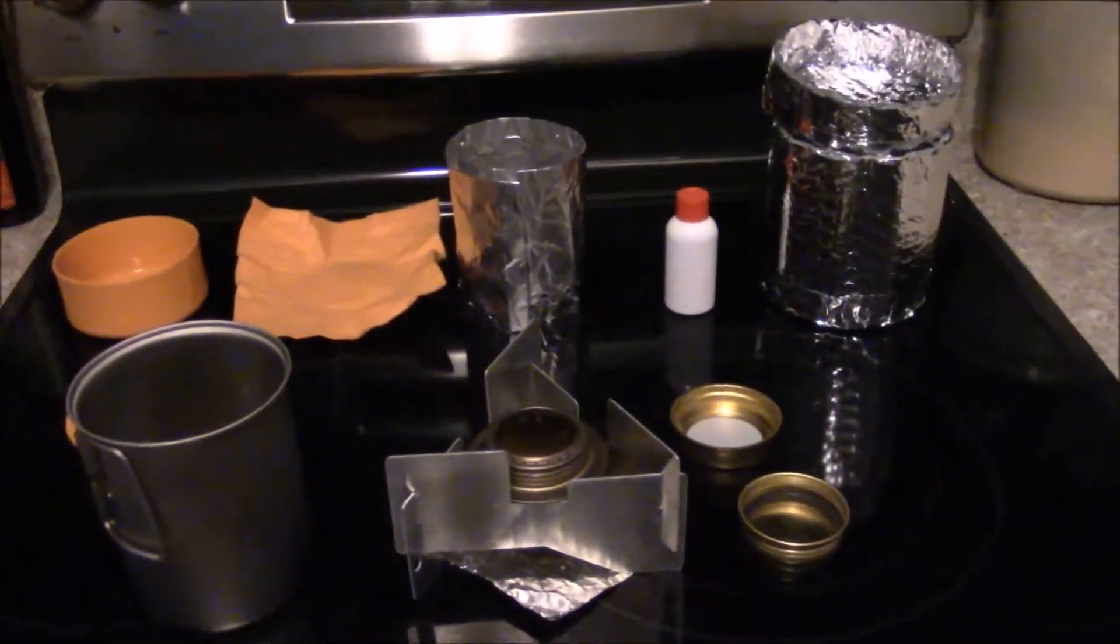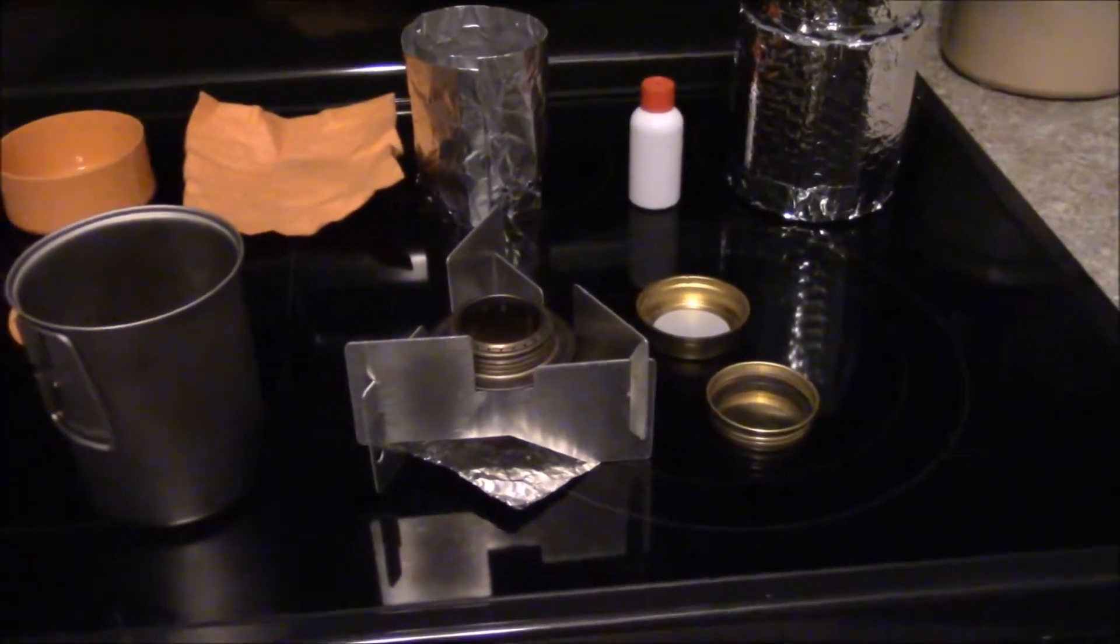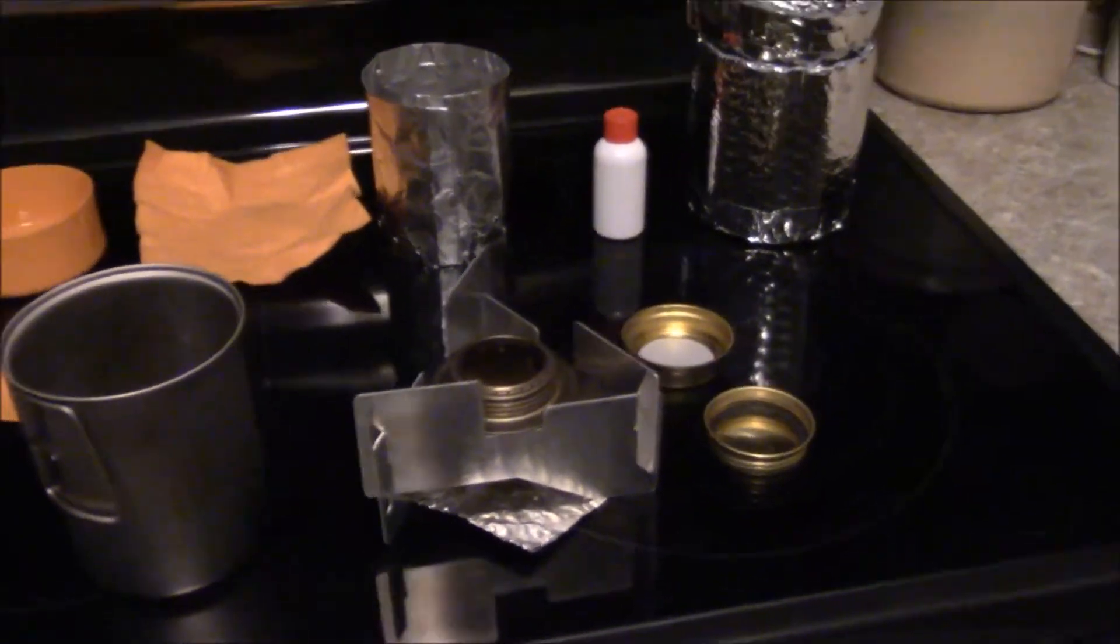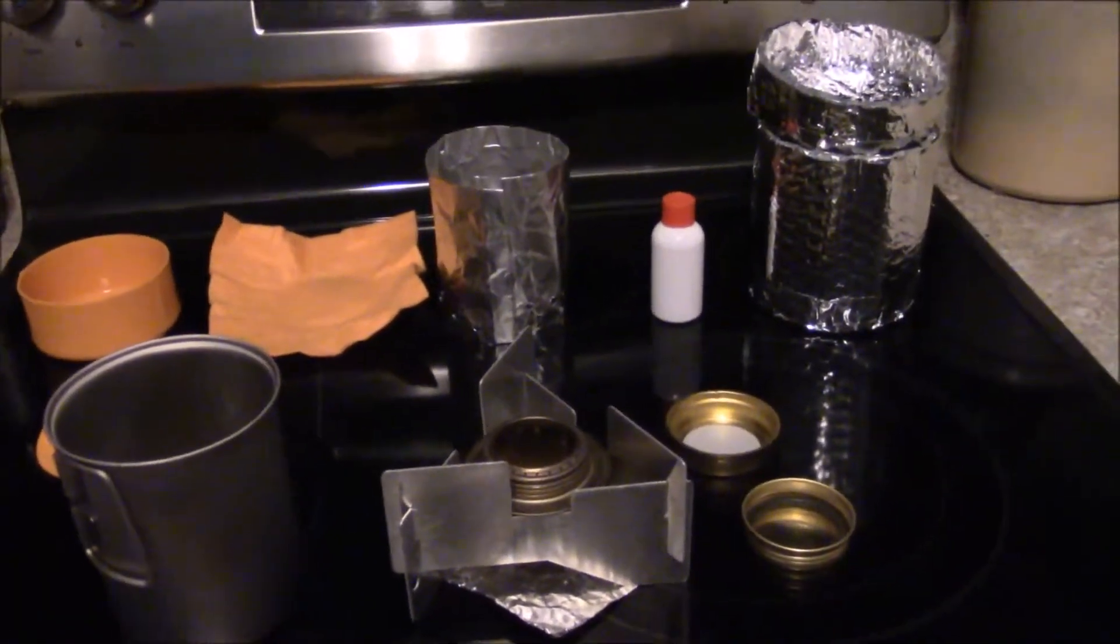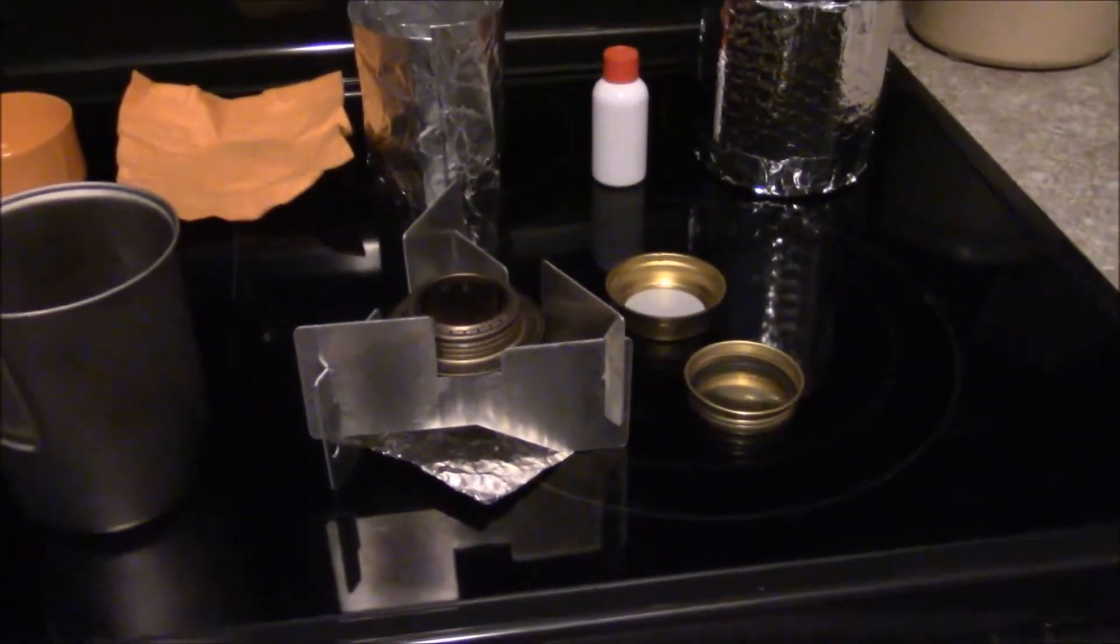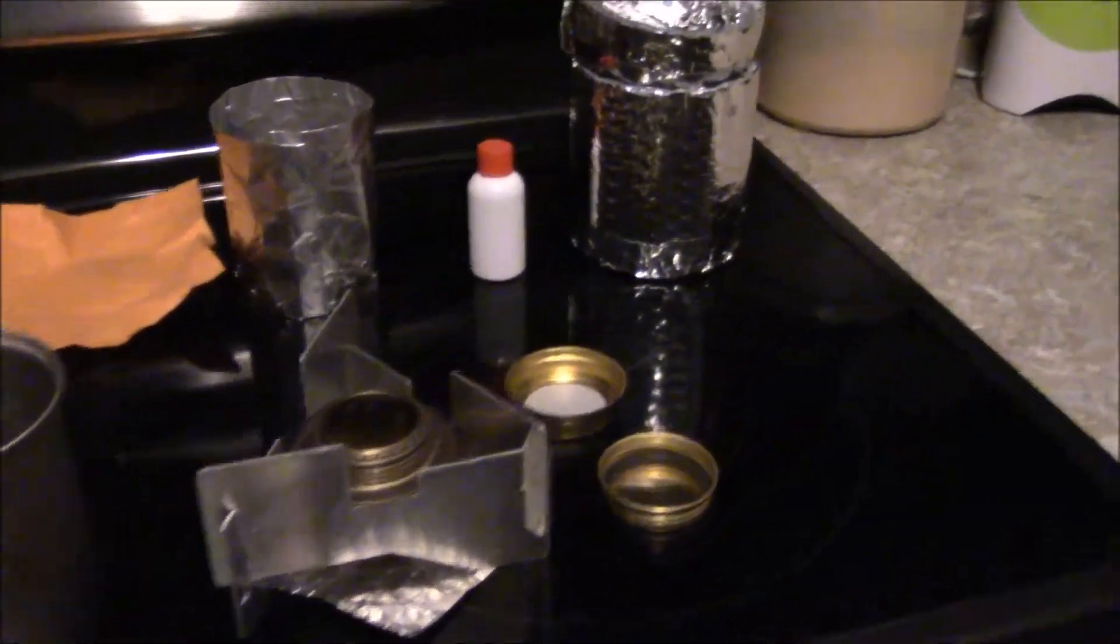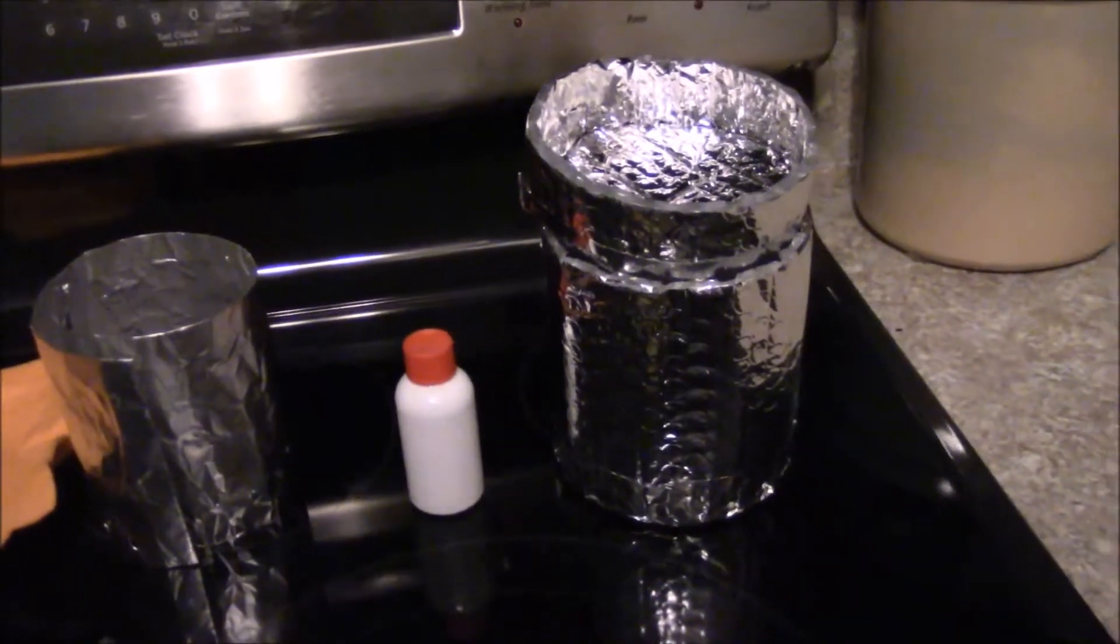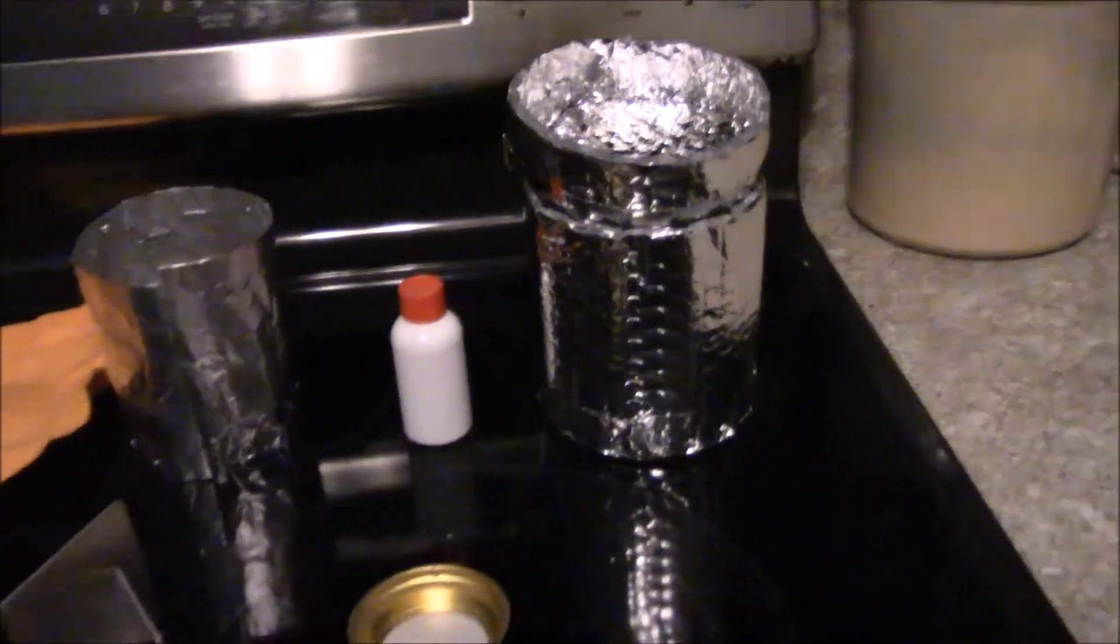The stand that the Trangia is sitting on is 78 grams or two and three-quarters ounces. The windscreen is 16 grams or about half an ounce. The ground reflector is six grams, about an eighth of an ounce. The fuel bottle, which is just a five-hour energy bottle, is 12 grams or three-eighths of an ounce.